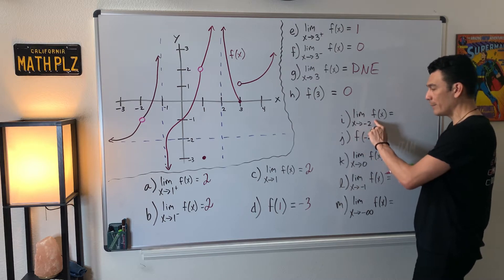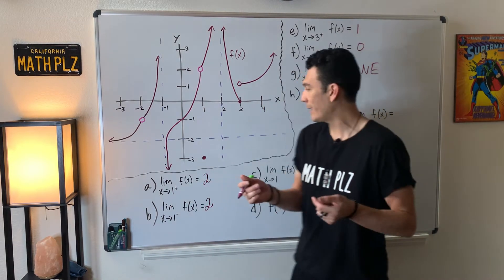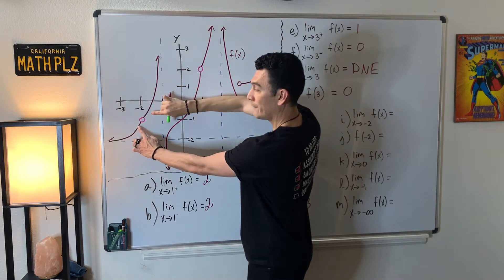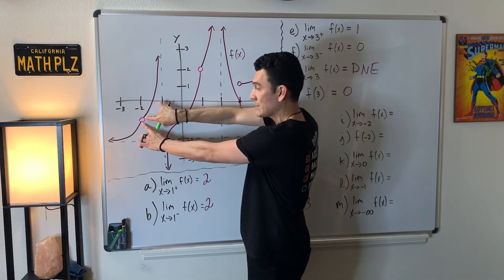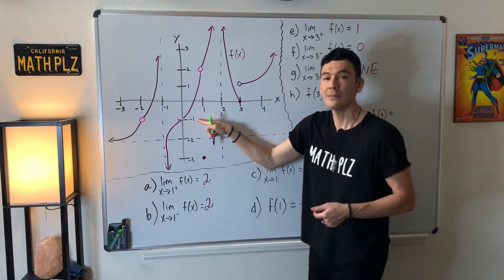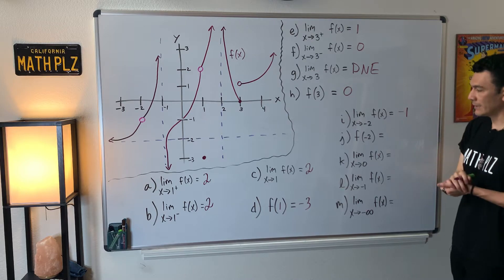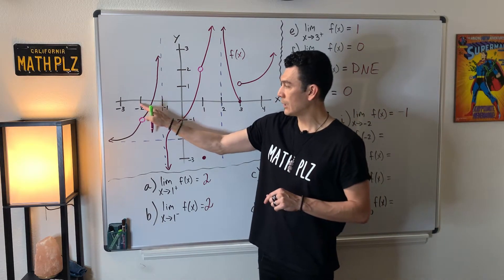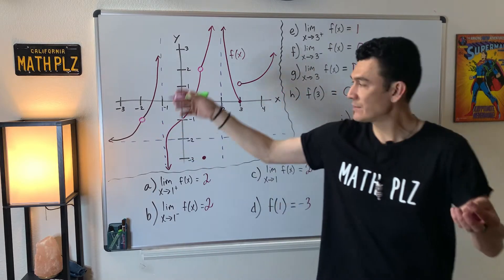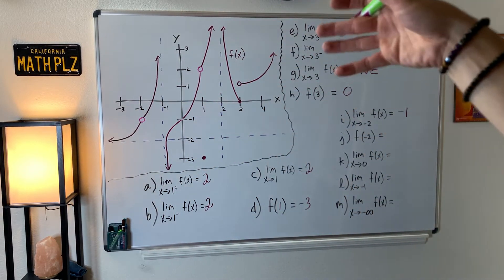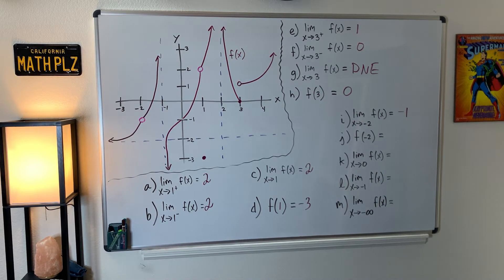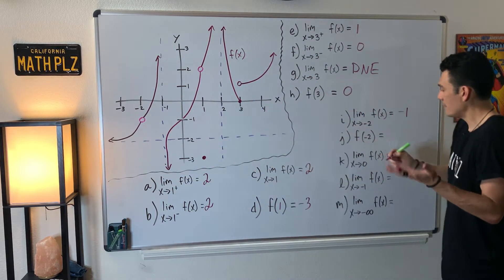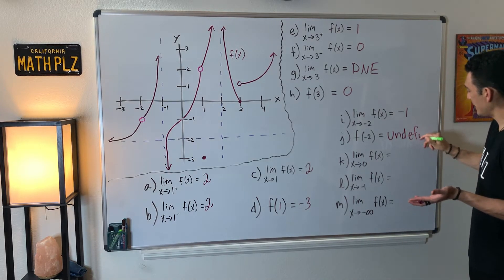Now it says approach negative two with no direction specified, so we do it from both directions. Approaching negative two from both sides, the y coordinate appears to be negative one, so that's the answer. But if you actually plug in negative two for x, there's a hole and no solid point above or below to catch us, so that value is undefined.